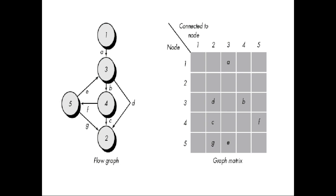The graph matrix is a tabular representation of a flow graph. By adding a link weight to each matrix entry, the graph matrix can become a powerful tool for evaluating program control structure during testing. The link weight provides additional information about control flow. In its simplest form, the link weight is one for a connection that exists, or zero if a connection does not exist.